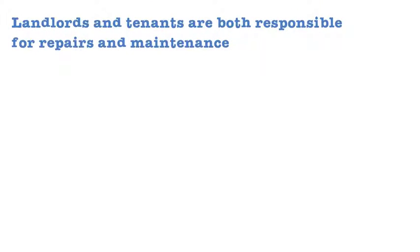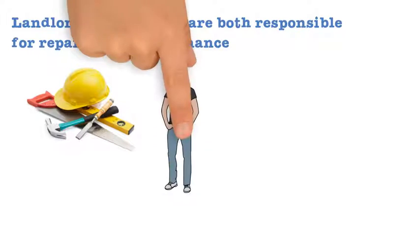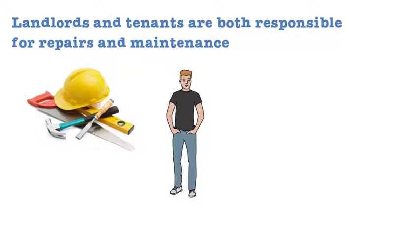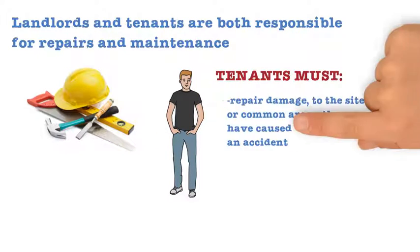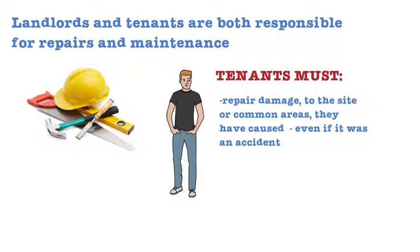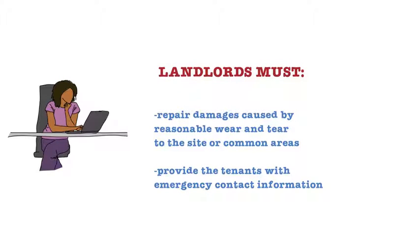A landlord and tenant are both responsible for repairs and maintenance. The tenant must repair damage to the site or common areas they have caused, even if it is an accident. A landlord must maintain and repair damages caused by reasonable wear and tear to the site or common areas. The landlord must also provide tenants with emergency contact information.